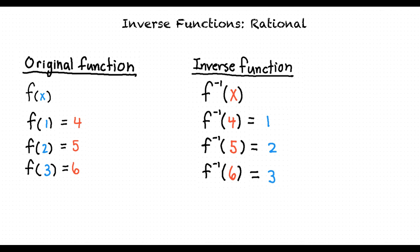So what you're saying is that if a function inputs a certain x value and outputs a certain y value as a result, the inverse of this function would be such that if we inputted this y value into it, it would output the x value. That's exactly right.